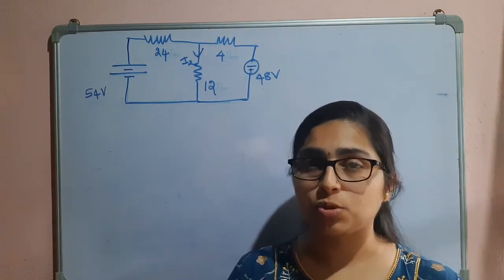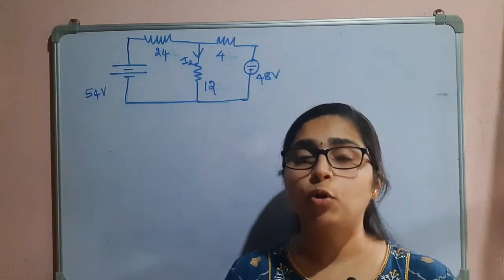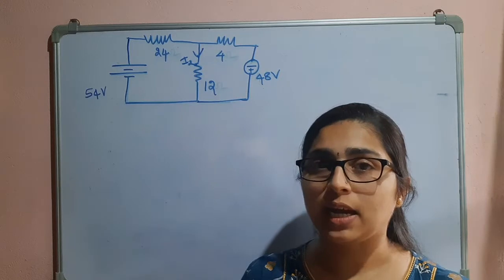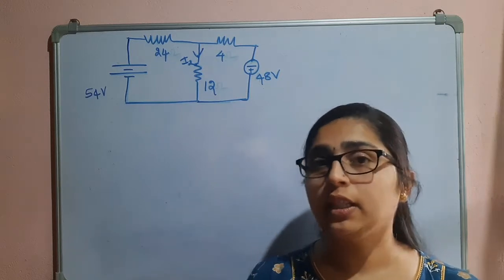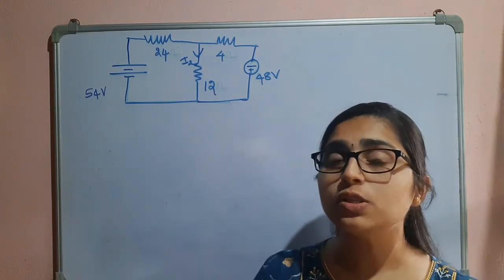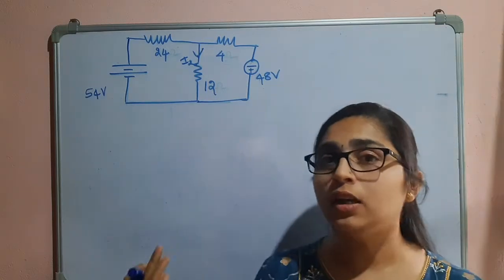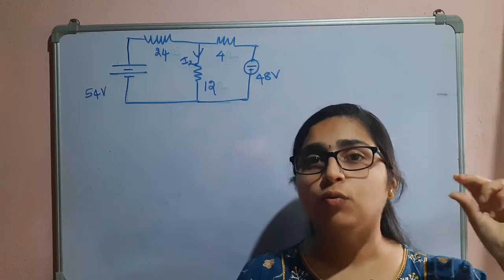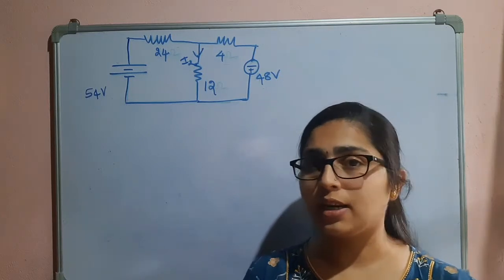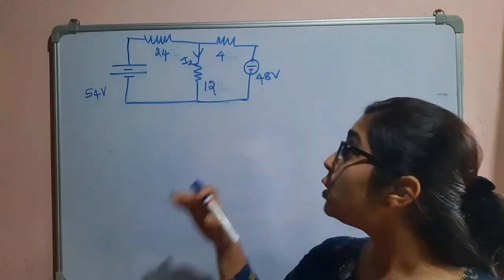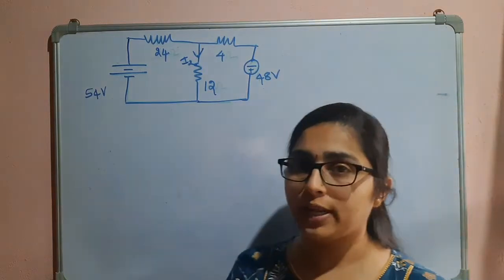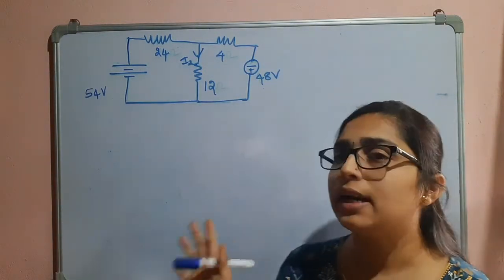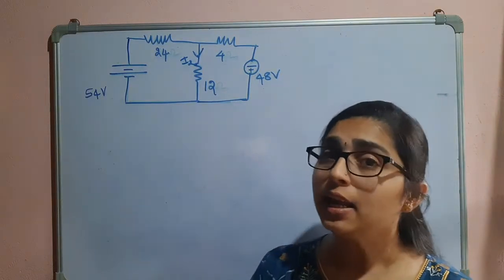You know about the superposition theorem: if we have more than one source, we will consider only one source at a time and deactivate the other sources. Deactivating means a voltage source will be shorted and a current source will be made open. In this case we have two voltage sources only — there is no current source.